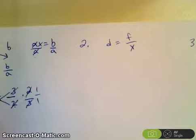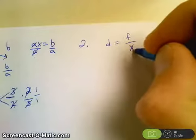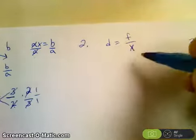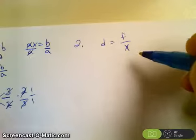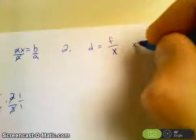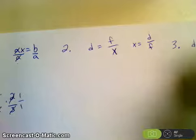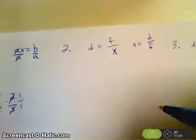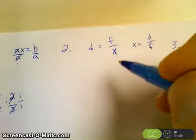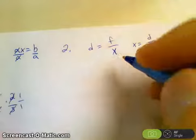Okay, number 2. This one is probably the most commonly missed example. A lot of students will say that x equals d over f. It's obvious. You just divide both sides by f. Well, you could divide both sides by f, but if you did that,